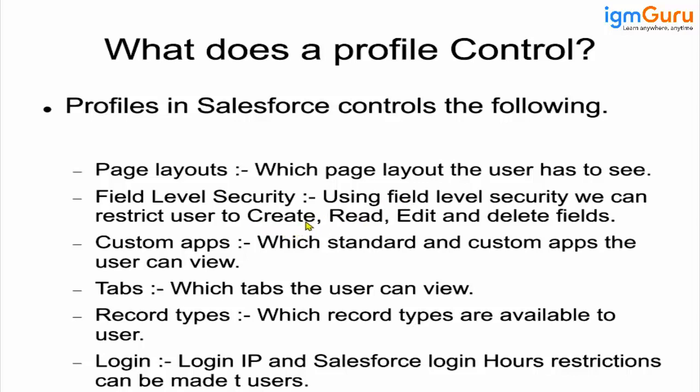You will hear the terminology CRUD very often. It stands for C for Create, U for Update, R for Read, and D for Delete. These are the four types of permissions you can control through a profile. This is a very common jargon word you should know.